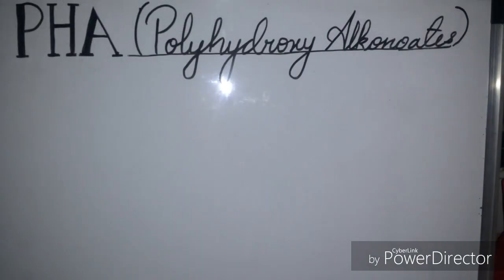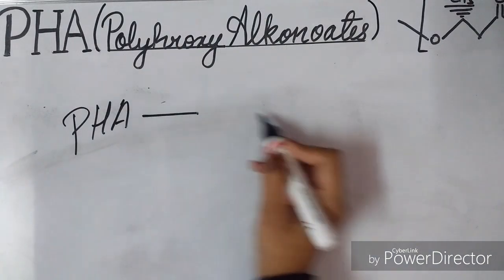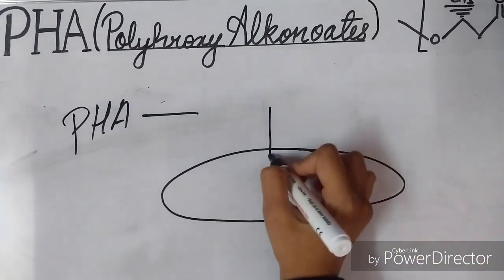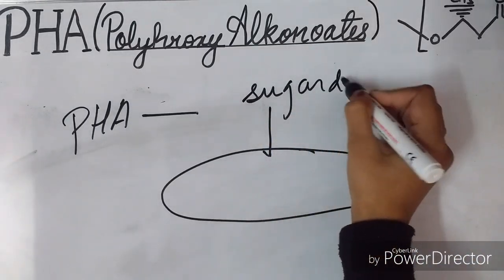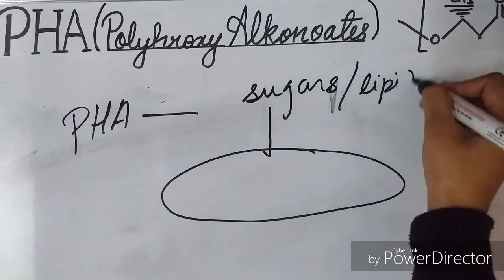Today we will be discussing PHA, which is polyhydroxyalkanoates. PHA are linear polyesters produced in nature by bacterial fermentation of sugars and lipids.